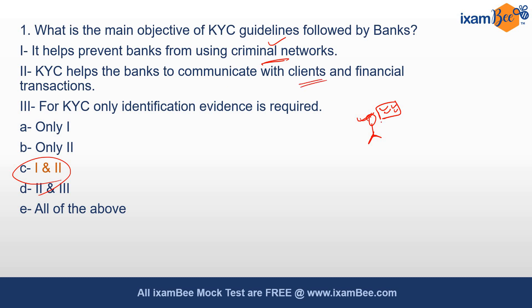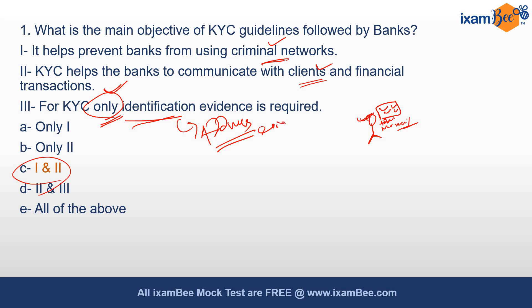Statement B says KYC helps banks to communicate with clients regarding financial transactions. In KYC, you know their address, phone numbers, and email IDs, so if there are financial transactions or frauds, banks can easily communicate with the customer — so yes, Statement B is correct. Statement C says for KYC only identification evidence is required. The keyword here is 'only.' Is identification alone sufficient? No — address proof is also needed. That is why Statement C is incorrect.